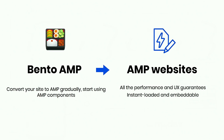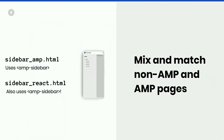This was also made possible because of Bento AMP — you can now convert your site gradually to AMP and start using AMP components over time, and then get all the performance guarantees when you're fully on AMP. For example, you can use an AMP sidebar in AMP or in React, reusing the same component everywhere. Accessibility is something we don't talk about enough — building a custom sidebar makes it quite hard to manage focus state and full accessibility, but the AMP sidebar does a lot of that grunt work for you.